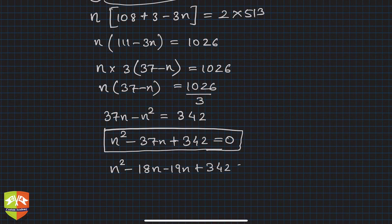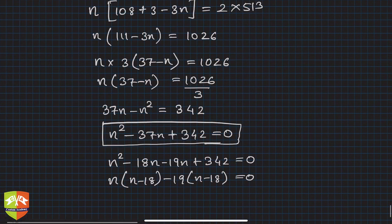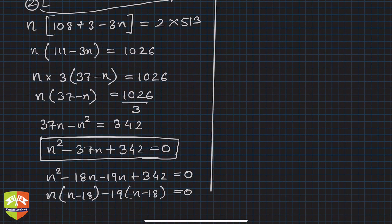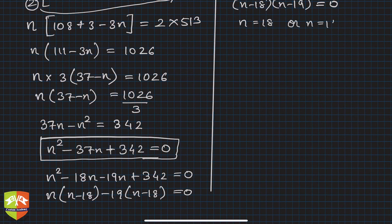Clearly, n(n - 18) - 19(n - 18) = 0. Splitting the middle term helped. So this becomes (n - 18)(n - 19) = 0.